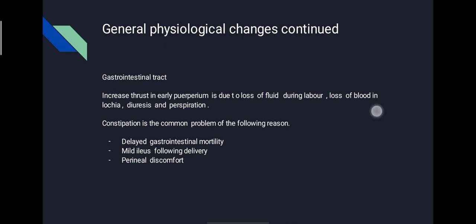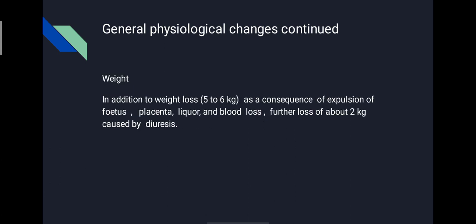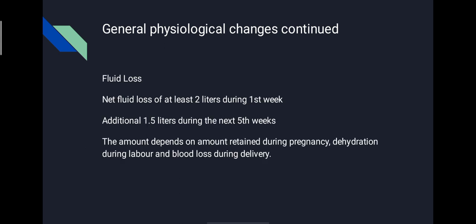Regarding weight: in addition to weight loss of about 5 to 6 kg as a consequence of expulsion of fetus, placenta, liquor, and blood loss, there is a further loss of about 2 kg caused by diuresis and fluid loss. Net fluid loss is at least 2 liters during the first week and an additional 1.5 liters during the next 5 weeks. The amount depends on the amount retained during pregnancy, dehydration during labor, and blood loss during delivery.